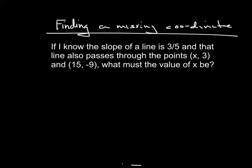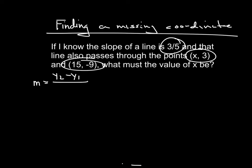Same exact problem — I'm going to show you how it can be done a little differently. This other way is probably the most common way this is actually taught. What people will say is: you have two points and a slope, so just use the slope formula. So m = (y2 - y1) / (x2 - x1). Fill everything you can in, then go from there.